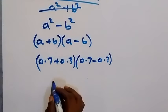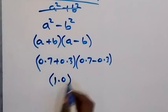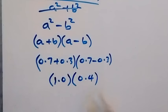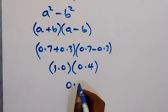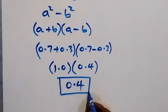Then from here, when we add this together we get 1.0, that's just 1. Then when we subtract this you get 0.4. And when you multiply this, the answer is 0.4. So here we have the solution to this problem as 0.4.